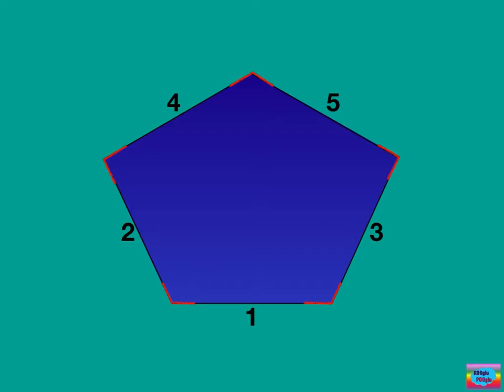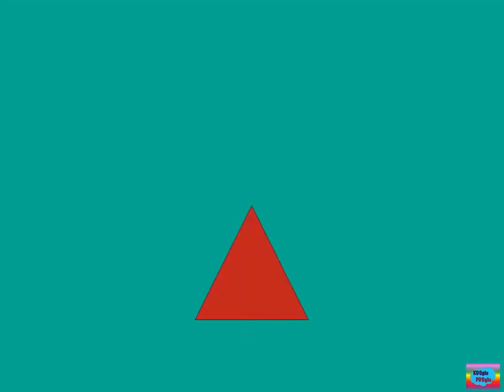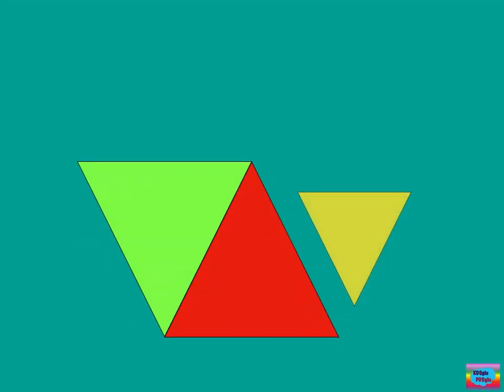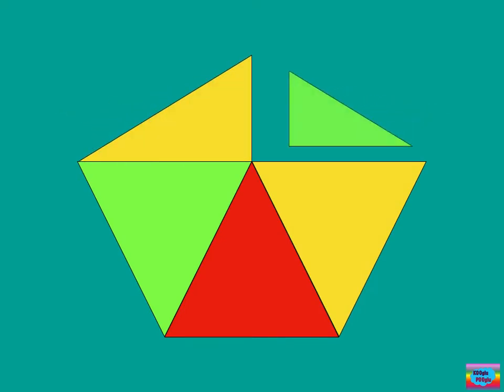And to make a pentagon out of a triangle, you can use five triangles. First make a trapezoid and then make a long triangle.